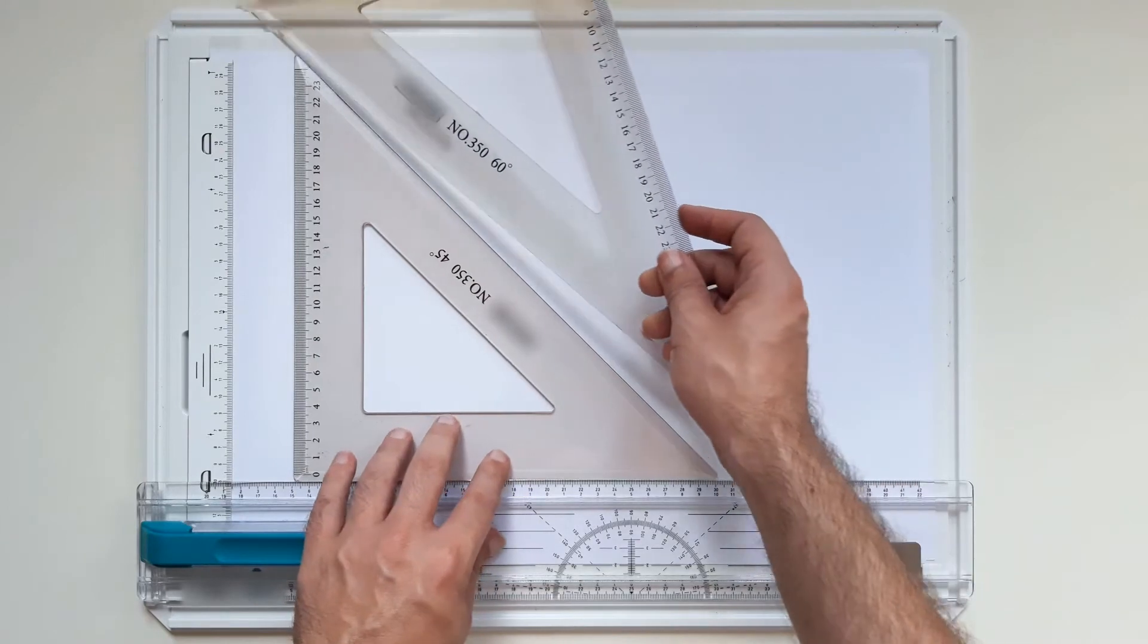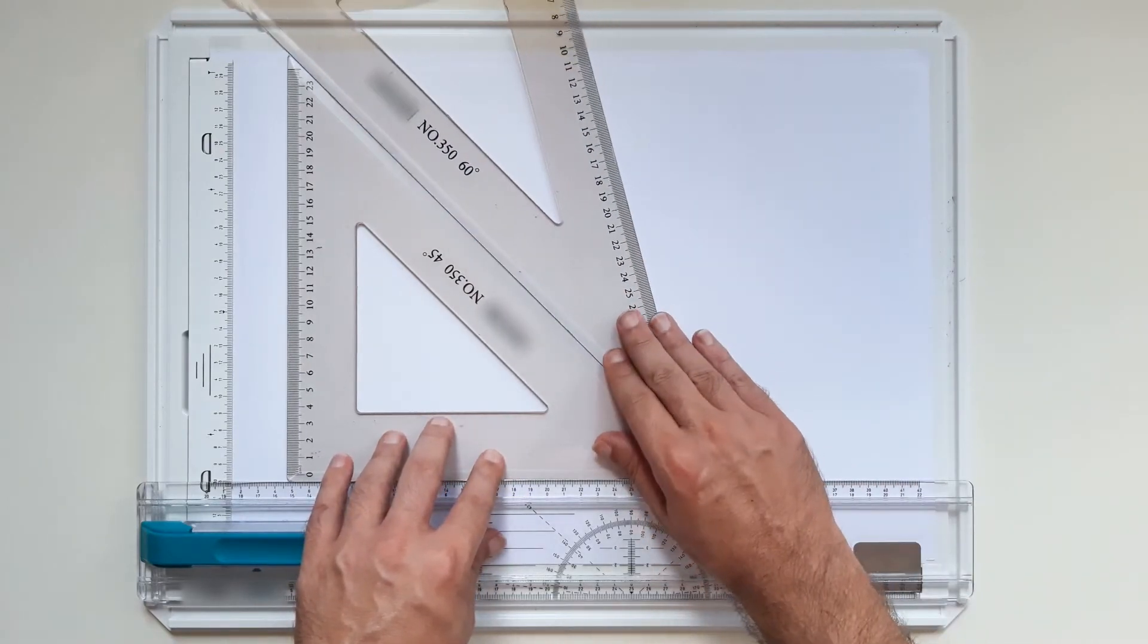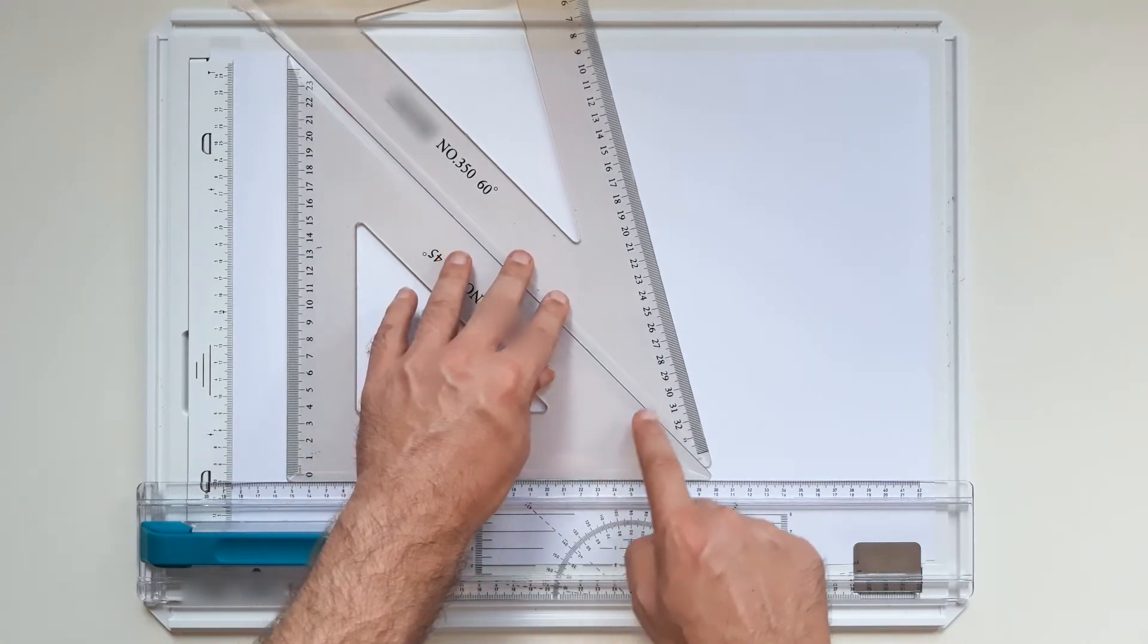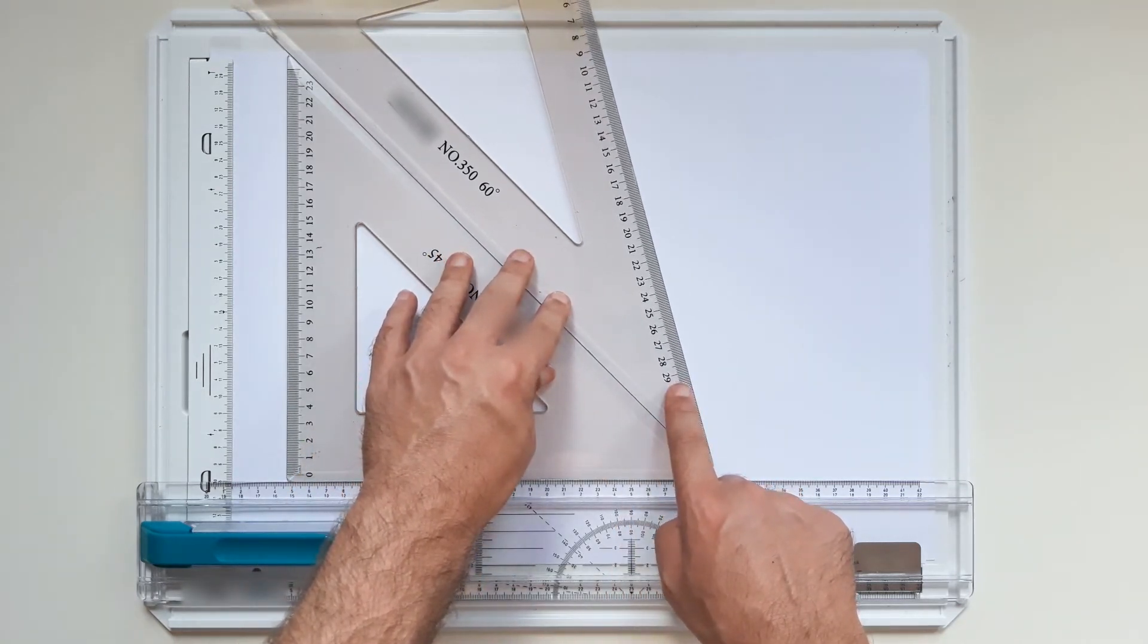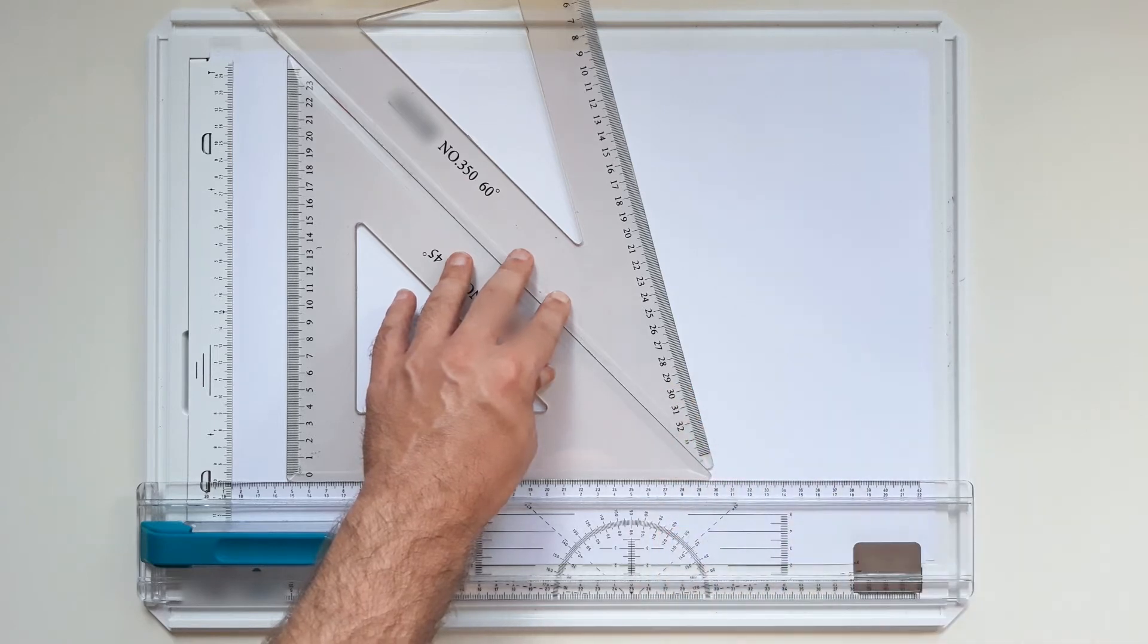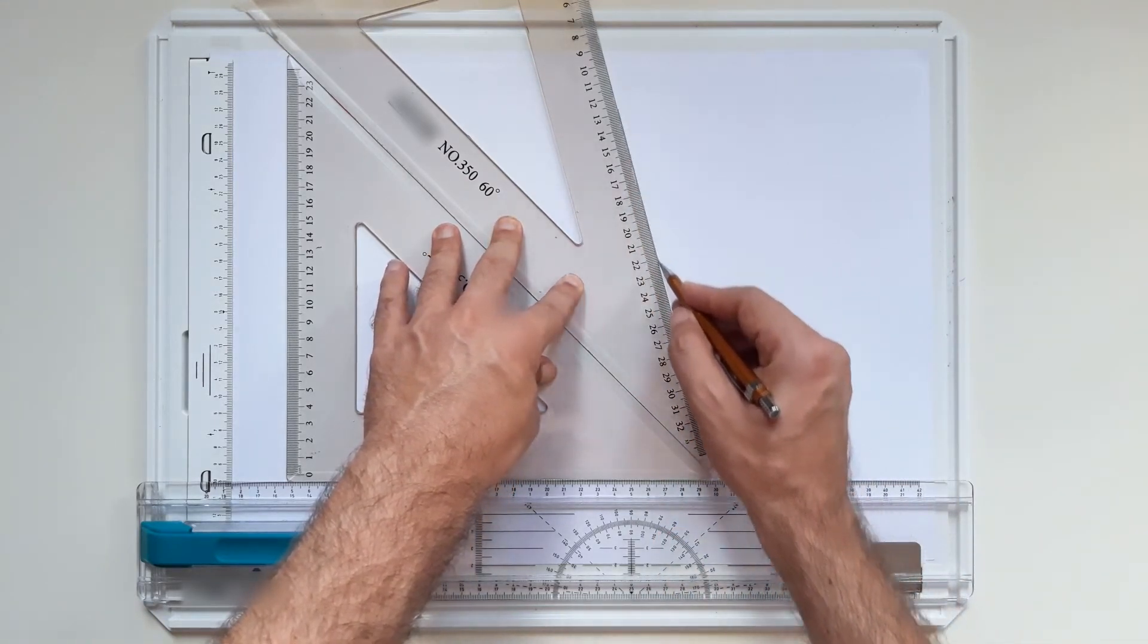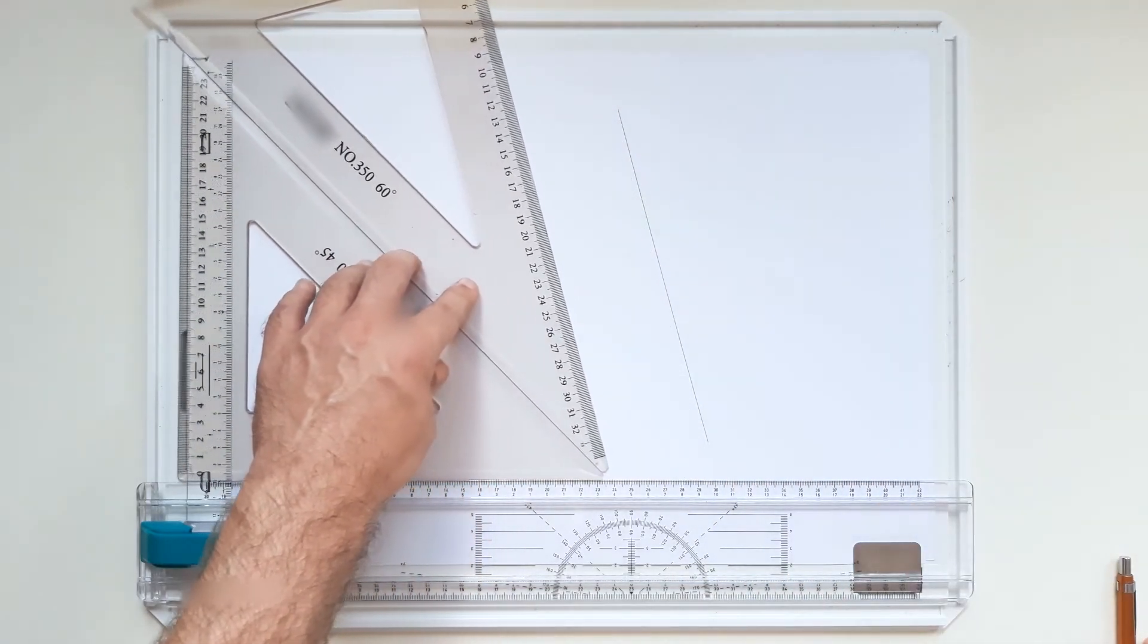So if we put both set squares on top of each other, like so, 45 degrees and 30 degrees, if we add them up together, they make up 75 degrees. And this line over here is a 75 degree line.